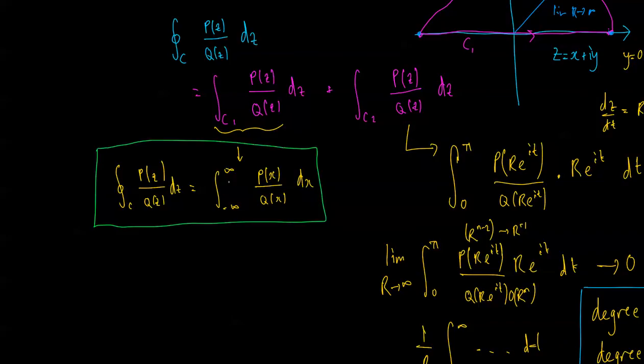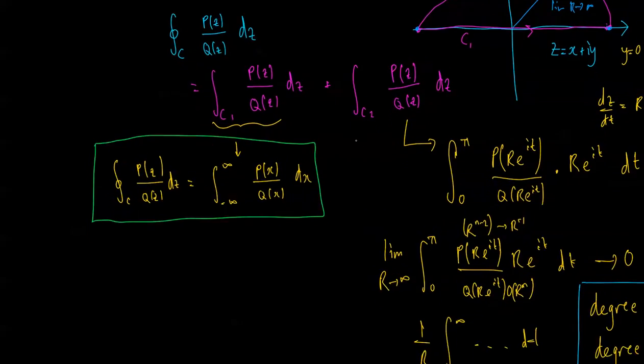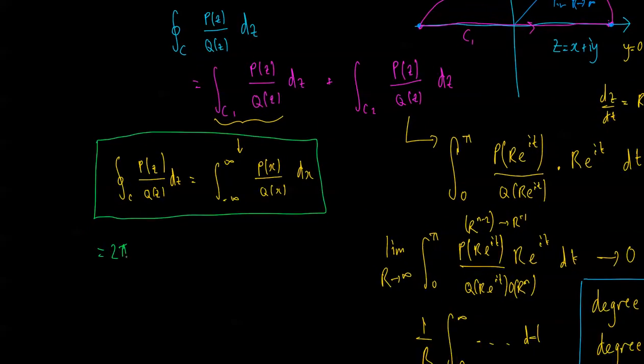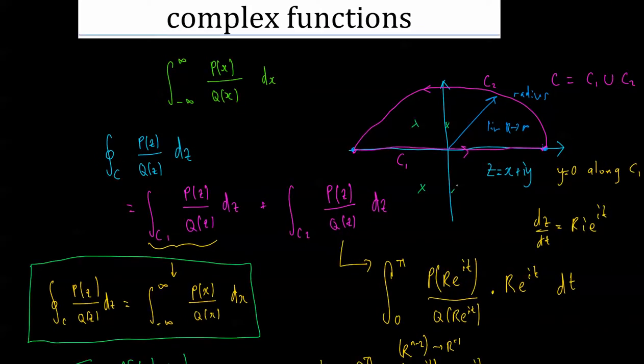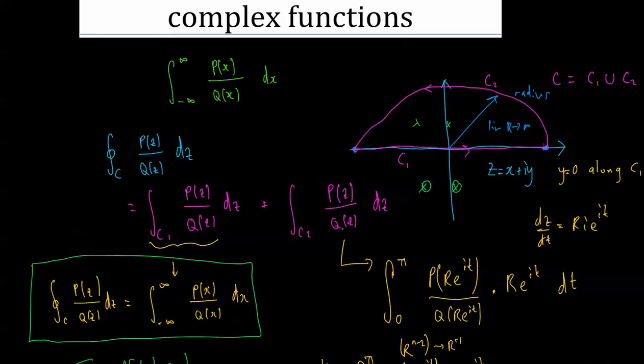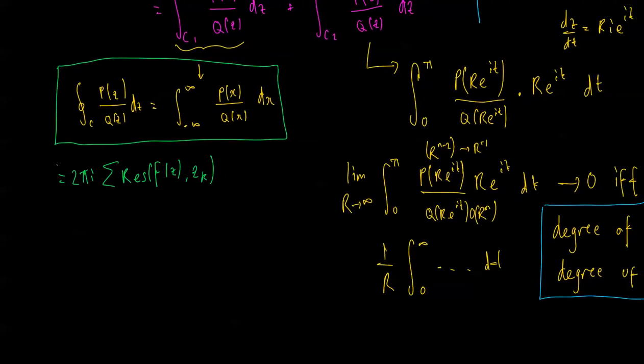Okay, so the integral from negative infinity to infinity of p of x on q of x dx, the thing we're trying to solve, is equivalent to the closed contour integral of the complex function dz, which is just equal to 2 pi i times the sum of the residues of the function p of z on q of z for all z k's, where k are all the singularities that are in the upper half of the plane. If we have singularities in the lower half of the plane we don't need to worry about them. Okay, so that is the result and we'll have a look at an example in the next video.